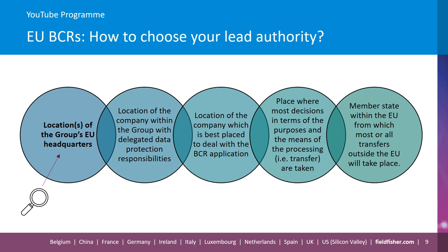If a company is seeking to get EU BCRs approved, it needs to propose a supervisory authority to be its lead by submitting part one of the application to that authority. WP 263 provides guidance on relevant factors for choosing the BCR lead. These criteria include the location of the group's European headquarters, the location of the company within the group with delegated data protection responsibilities, the location of the company best placed in terms of management function and administrative burden, the place where most decisions on purposes and means of processing are taken, and the member state from which most or all transfers outside the EU will take place.